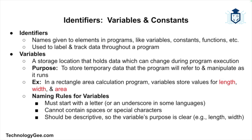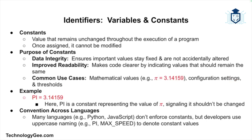A variable is a storage location in programming that holds data which can be changed or modified during program execution. The purpose of variables is to store temporary data that a program may need to refer to and manipulate as it runs. For example, if you were creating a program to calculate the area of a rectangle, you would use variables to store the length and width. Length, width, and area are all variables. When naming variables, most programming languages require they start with a letter or underscore, cannot contain spaces or special characters, and should be descriptive so the purpose is clear.